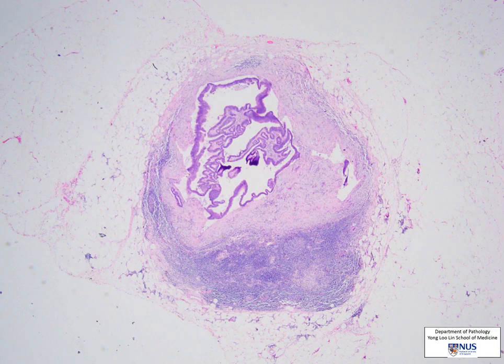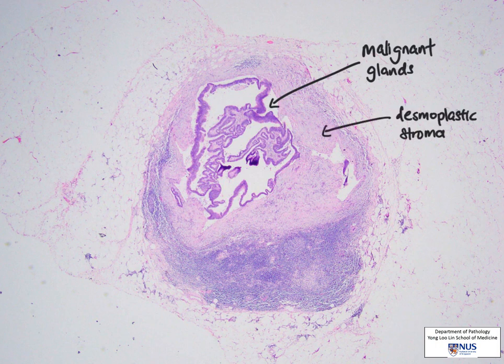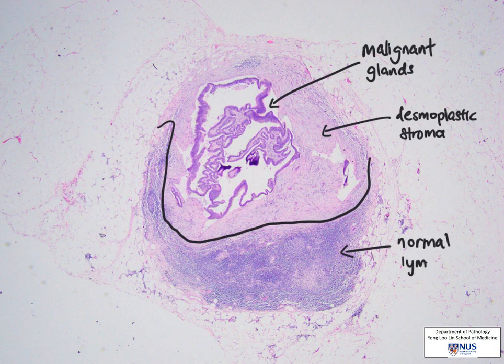We will now move on to the lymph node that was cut in cross-section. There are obvious glandular structures that are not native to the normal lymph node, and these are metastases, surrounded by desmoplastic stroma. Adjacent to the tumour is the normal lymph node architecture, filled with lymphocytes. After sampling all lymph nodes in the pericolic fat, this appears to be the only lymph node involved with tumour, and will be staged as N1.